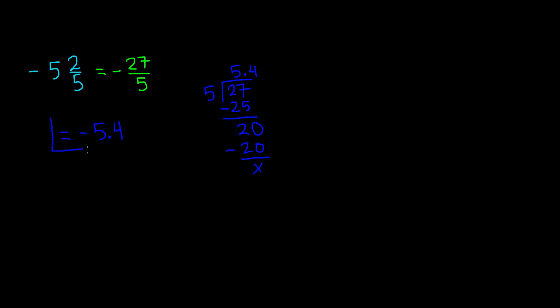Once again, this is a terminating decimal, that means it does not repeat. And remember, terminating decimals are rational numbers, so this also proves that negative 5 and 2 fifths is a rational number. That's all I have for this video. Thanks for watching and we'll see you guys next time. Bye.